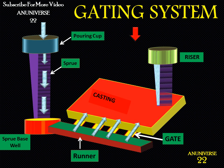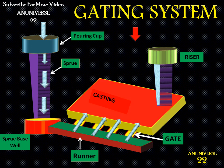Today we discuss the gating system. The gating system means all the passes through which molten metal enters the mold cavity. It includes the pouring cup, sprue, gate, runner, riser, and sprue base. The manner in which molten metal enters the mold has a great impact on the quality of the casting produced, so the gating system should be carefully designed and produced.